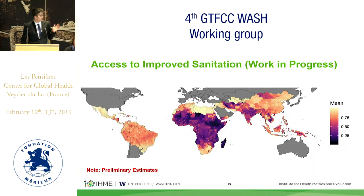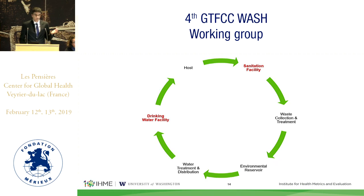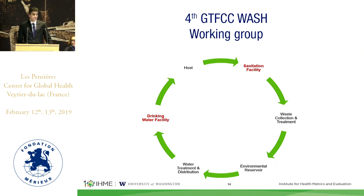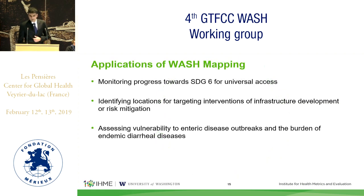While this only measures point-of-use access, we can still learn a lot. For example, in the Bangladesh situation, if there are high levels of access to piped water but cholera is still prevalent, that indicates we need to go further upstream — the point-of-use drinking water facility is doing well, but the water treatment of the distribution system is not. I hope this resource is useful. At IHME, we welcome any feedback on how we can disseminate this better and on particular indicators you would like us to map. Thank you.